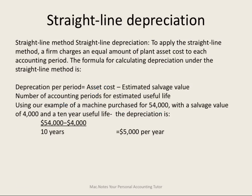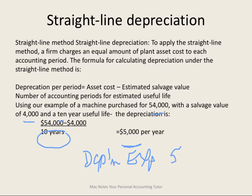For example, using the straight-line method: this company bought an asset for $54,000. It has a salvage value of $4,000 and a useful life of 10 years. So its depreciable value is $50,000. It's useful over the next 10 years, so the depreciation we recognize every year is $5,000. The adjusting entry is: debit depreciation expense $5,000, credit accumulated depreciation $5,000. That's how we do it under straight line.